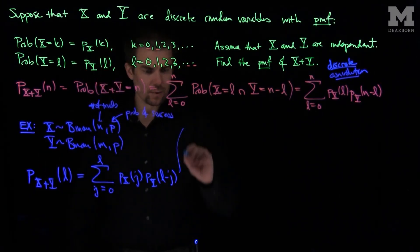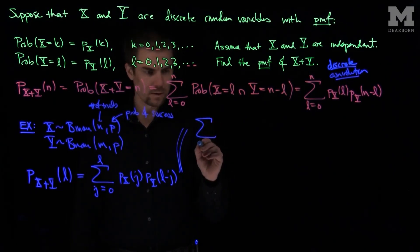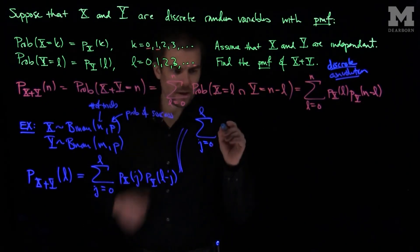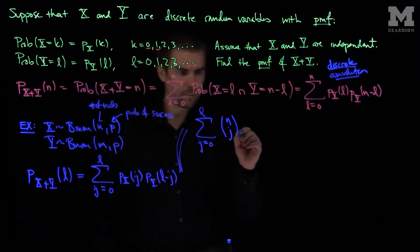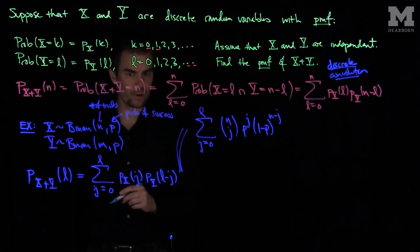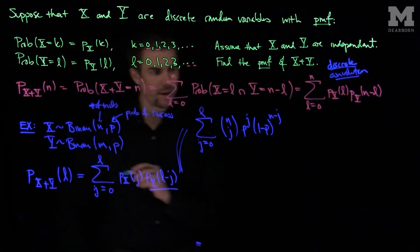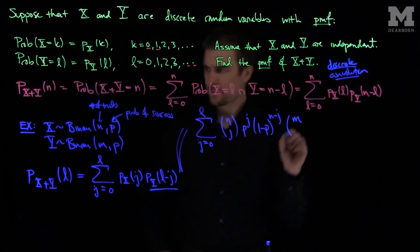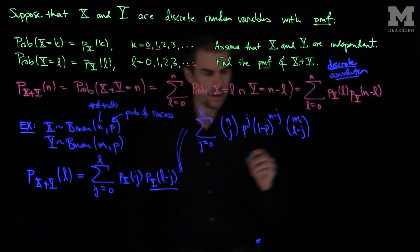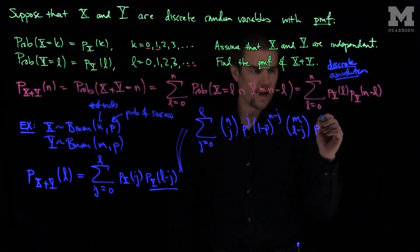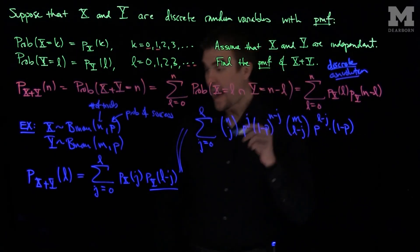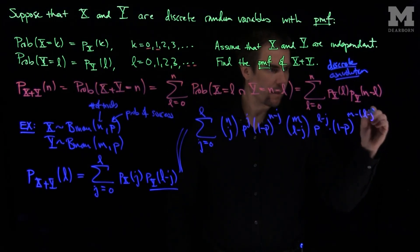Now we know what both of these terms are. The probability that X equals j is n choose j times p to the j times (1 minus p) to the n minus j — this is binomial. The probability that Y equals L minus j is m choose (L minus j) times p to the (L minus j) times (1 minus p) to the (m minus L minus j).